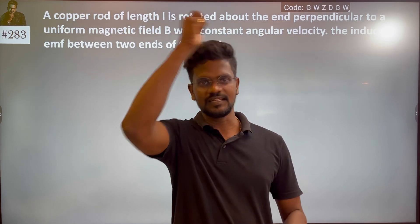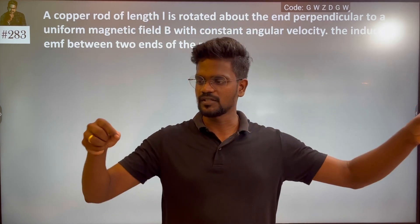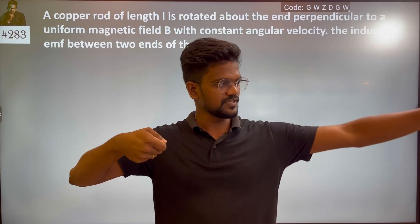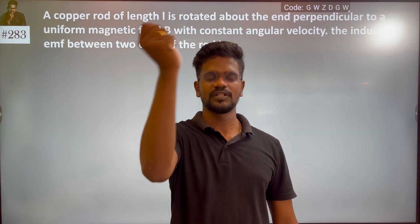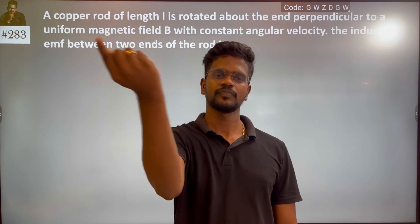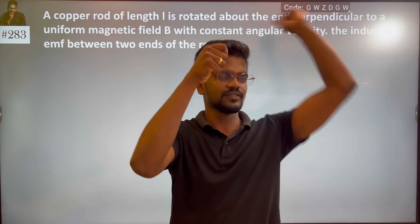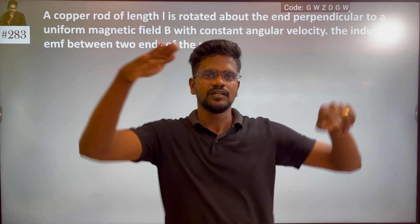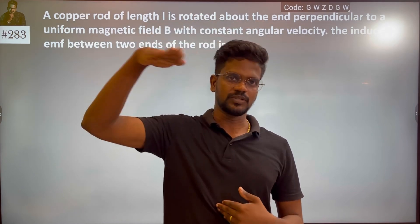Here is the rod. One rod is in my hand — this is the pivot end. The other end is rotating in circular motion, perpendicular to the magnetic field. The rotation is perpendicular to the field.